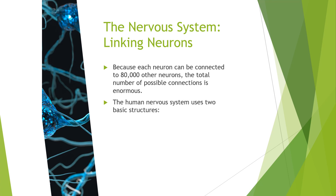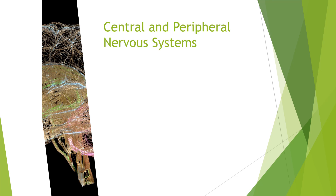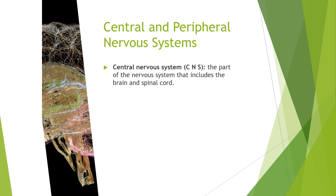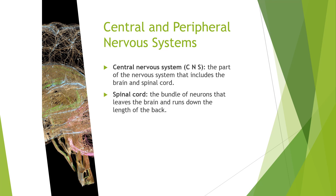With the nervous system, the human nervous system uses two basic structures. As mentioned, we have two nervous systems: the central nervous system and the peripheral nervous system. We're going to spend the next couple of slides talking about these nervous systems and the structures within them. Let's start out with the central nervous system, also abbreviated CNS — the part of the nervous system that includes the brain and spinal cord.